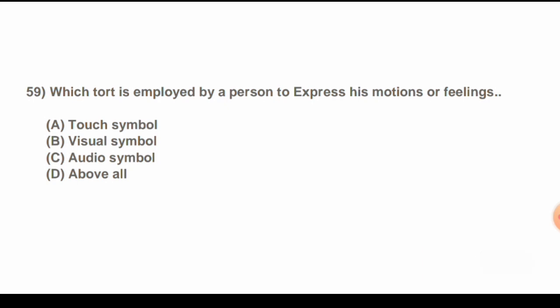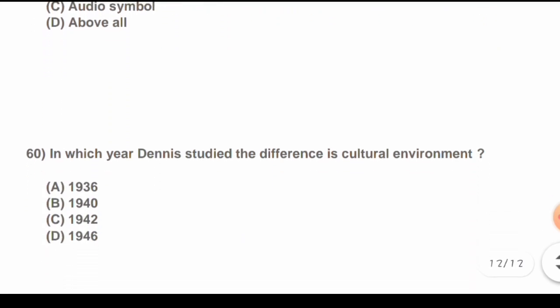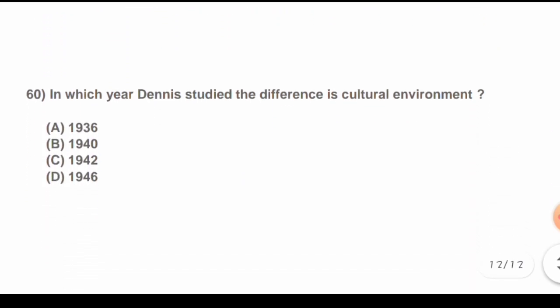Question 57: Which thought is employed by a person to express his emotions or feelings? Options are: A) Touch symbol, B) Visual symbol, C) Audio symbol, D) All of the above. The correct answer is D) All of the above.